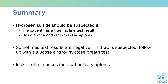In summary, hydrogen sulfide SIBO should only be suspected if the patient has a true flatline test result and also has diarrhea and other SIBO symptoms. If a patient has a flatline test result but is more constipated, you may want to look elsewhere — do a stool test or other diagnostic workup — because classic hydrogen sulfide SIBO must have a component of diarrhea. Perhaps in the future when we have a breath test that also measures hydrogen sulfide we'll see more nuances, but for now, to use a flatlining result to diagnose hydrogen sulfide, you need other SIBO symptoms and diarrhea to be present.